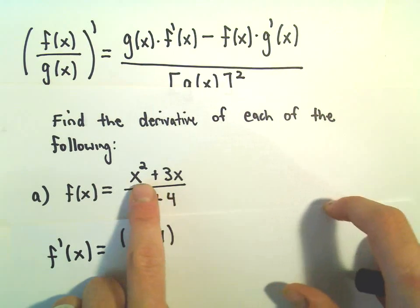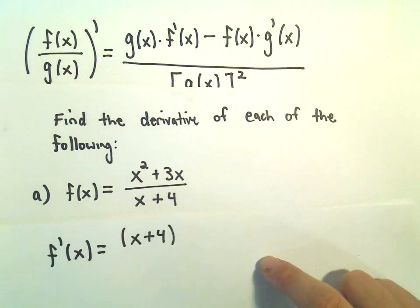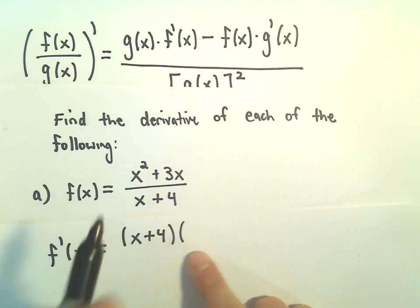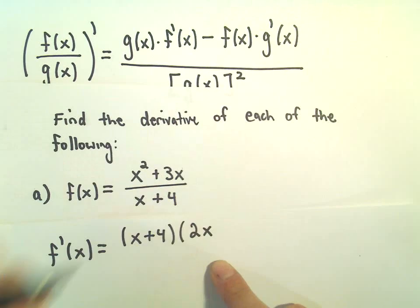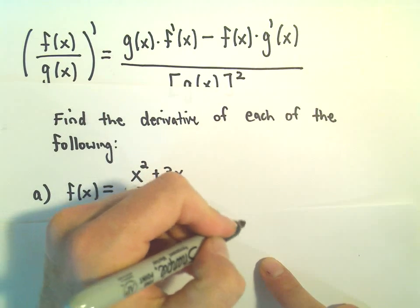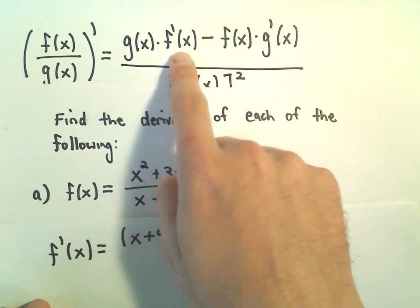Okay, I've got to multiply by the derivative of x squared plus 3x. Well, the derivative of x squared, the 2 would come out front and we would take 1 away, so we would get 2x to the first. The derivative of 3x is just positive 3. So there's our g times f prime.